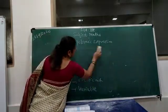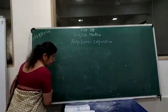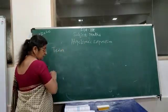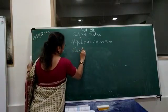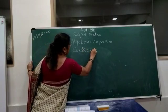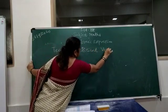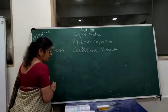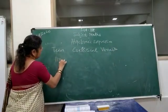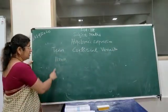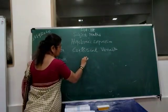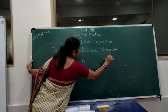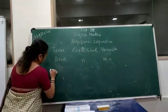Now we will see a table showing term, coefficient, and variable. For example, in the term 11MN: the coefficient is 11 and the variables are M and N.